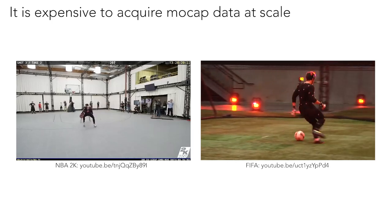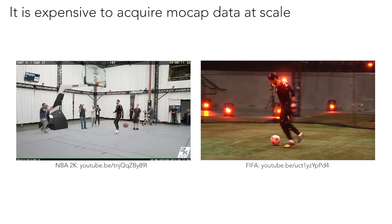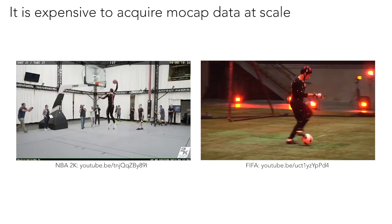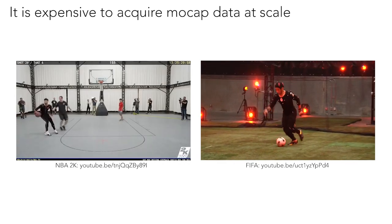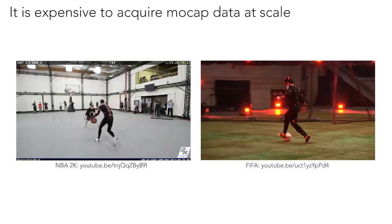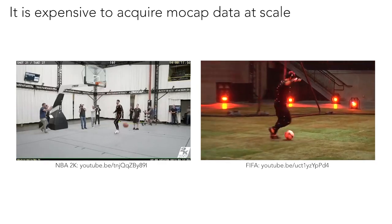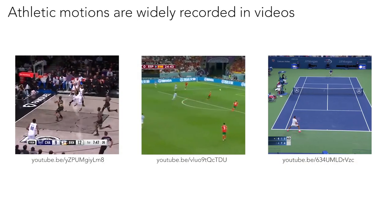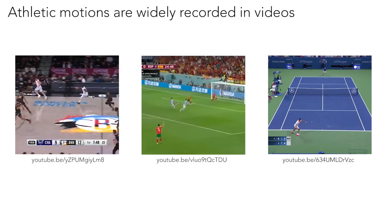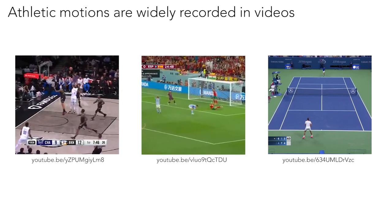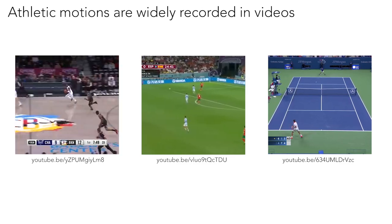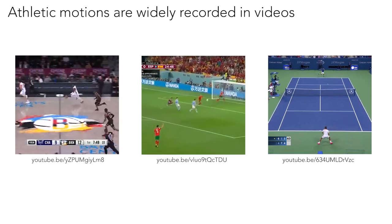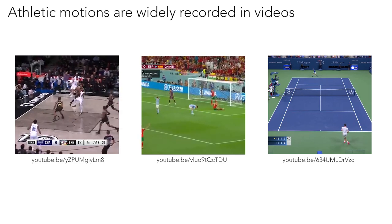Motion capture has been the most common source of motion data for character animation. While mocap is able to record high quality data, it can be difficult to use these systems to record athletic motion, which can require large capture volumes and highly skilled actors. On the other hand, human athletes are frequently recorded in videos, especially for sports. These videos have the potential to be a valuable source of data for character animation by providing a vast volume of high-quality data of highly specialized athletic motion.